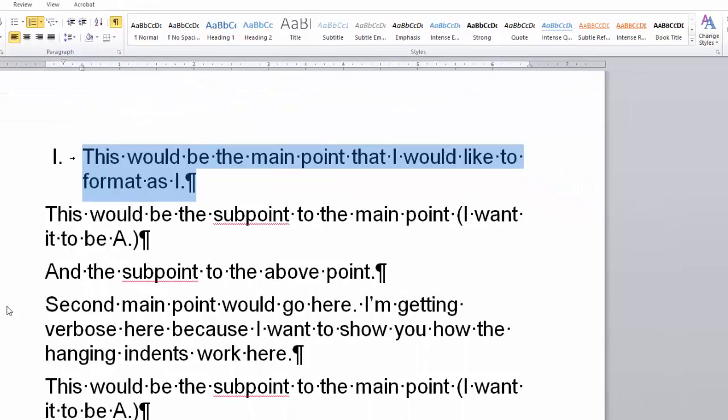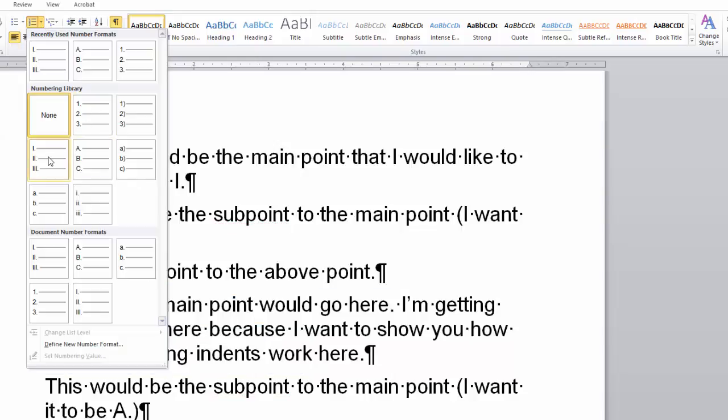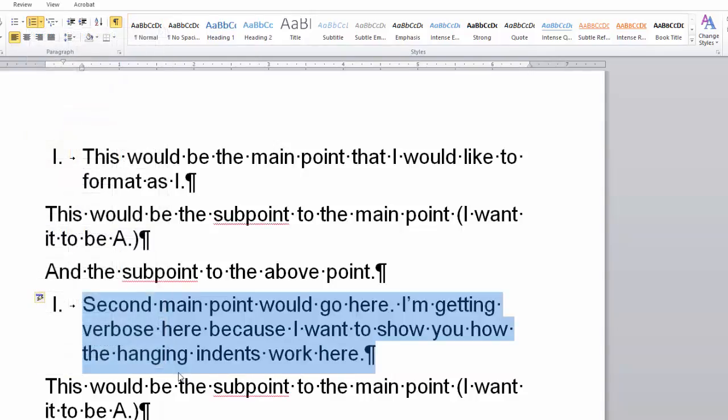If I want to do the same thing for this second point, I have two options here. The first is that I can do it again, and I come up here, I can choose this one or this one, and I can create it again. But notice here that it is a 1 and not a 2. If I have a Roman numeral 1 above, then this is going to be my second main point, and that's going to be a Roman numeral 2.